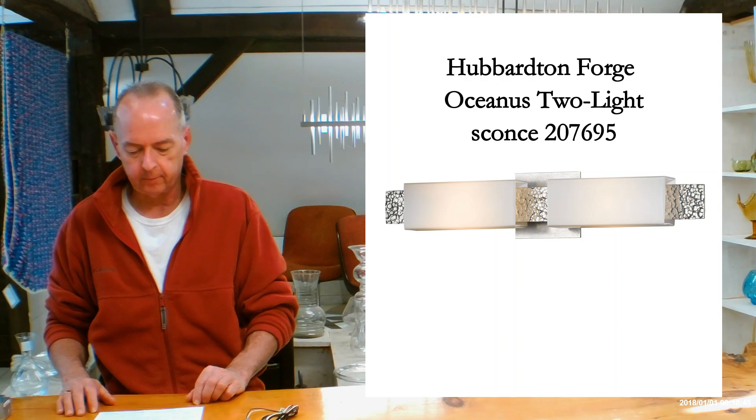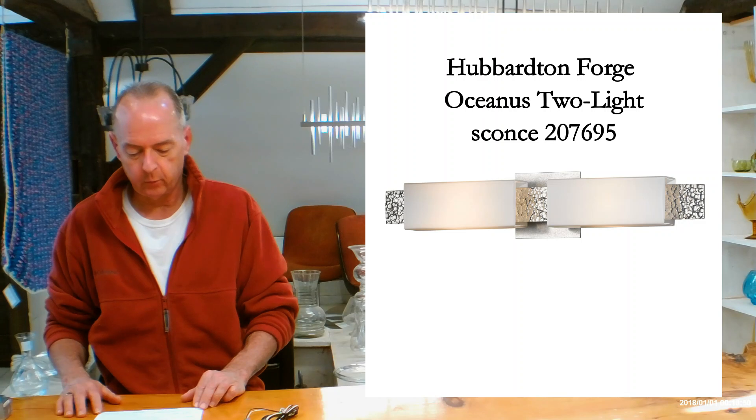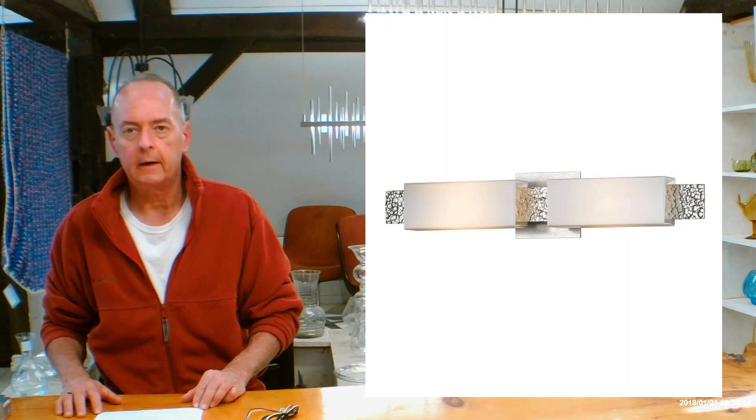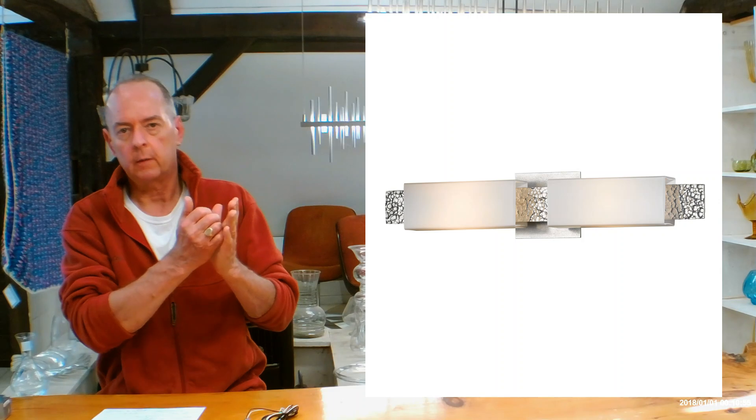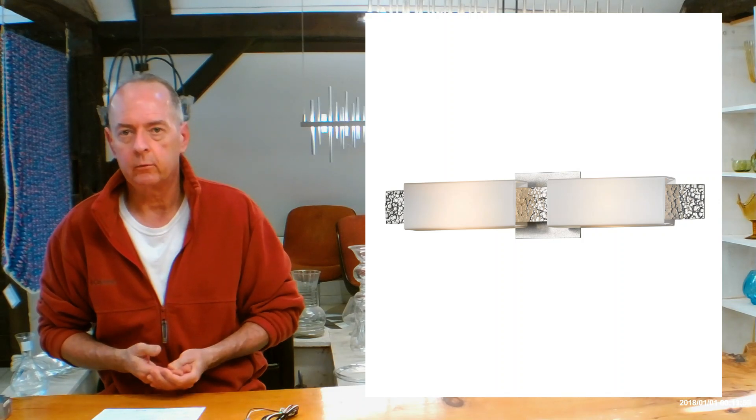Let's get into the height of the fixture itself. 4.6 inches, if you're using it horizontally, by 23 inches long. The projection on this is only 3.8 inches and that's going to be the distance from the wall coming out.